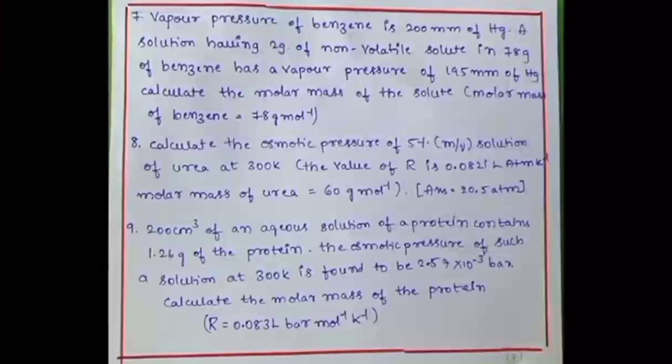Calculate the osmotic pressure of 5 percent solution of urea at 300 kelvin. The molecular mass of urea is given, answer is 20.5 atm. 200 cm cube of an aqueous solution of a protein contains 1.26 gram of the protein. The osmotic pressure of such a solution at 300 kelvin is found to be 2.57 into 10 to the power of minus 3 bar. Calculate the molecular mass of the protein, R value is given.